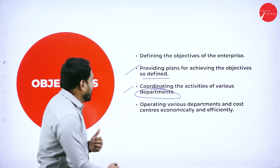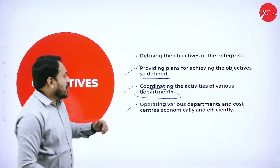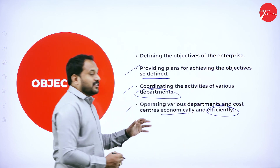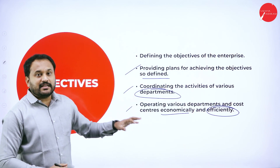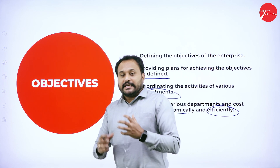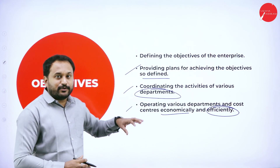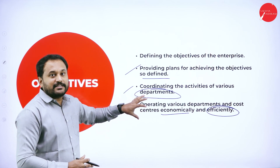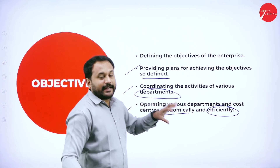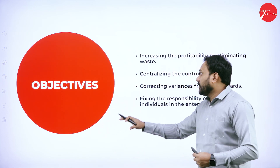The next objective is operating various departments and cost centers economically and efficiently. This is the main reason we need budgetary control — each and every department will know how much they are supposed to spend, so it's a regular check-up for the department so that they get to know what they are up to.